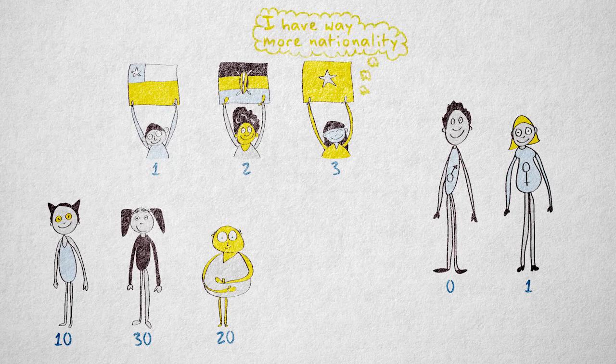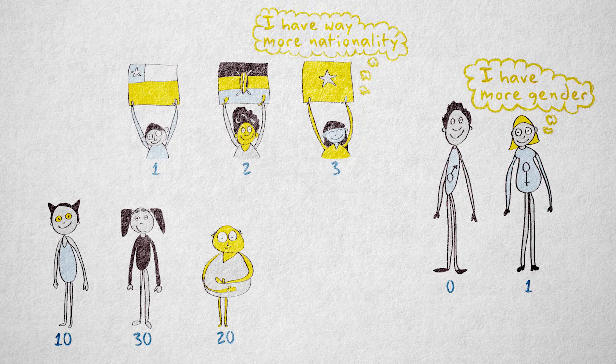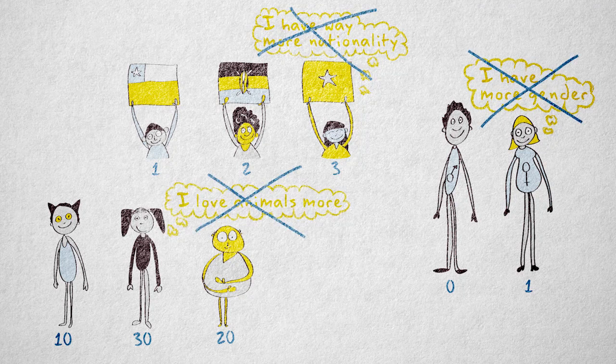A German doesn't have more nationality than a Brit. Women don't have more gender than men. And being a dog person doesn't mean you have a stronger animal preference than a cat or a hamster person. There's no order to these properties.